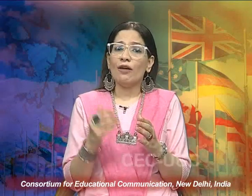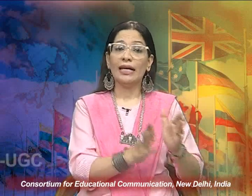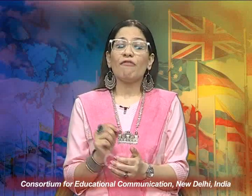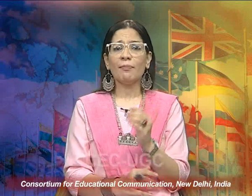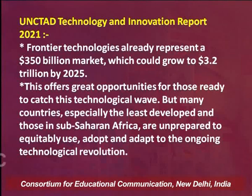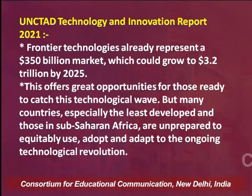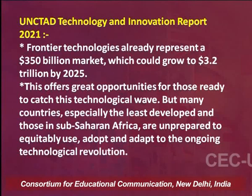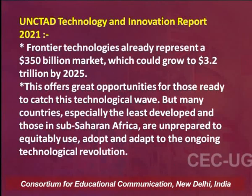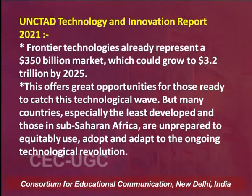As we deliberate on how information technology has presented a new revolution in global governance, we take reference to the UNCTAD Technology and Innovation Report 2021, accessible from unctad.org. This report highlights that frontier technologies already represent a $350 billion market, which could grow to $3.2 trillion by 2025. By frontier technologies, we mean artificial intelligence, internet of things, and robotics. Today information technology is indeed a revolution, and this report points out that it offers great opportunities for those ready to catch this technological wave.